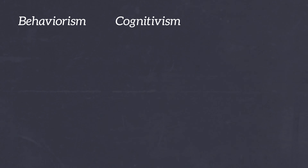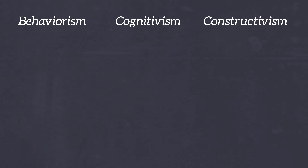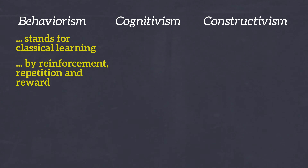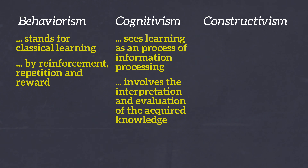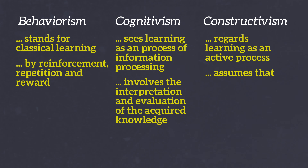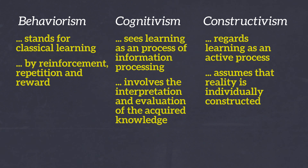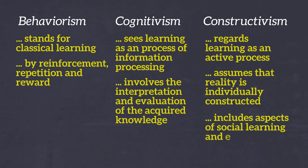The main learning theories covered here are behaviourism, cognitivism, and constructivism, together providing clues to the learning process. Behaviourism stands for classical learning by reinforcement, repetition, and reward. Cognitivism sees learning as a process of information processing, involving interpretation and evaluation of acquired knowledge. Constructivism regards learning as an active process, assuming that reality is individually constructed based on life experiences — including aspects of social learning and embodiment. The constructivist perspective will be the most appropriate for designing the exercises you lead at ETH.